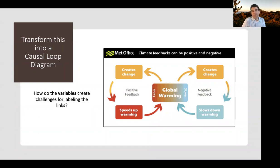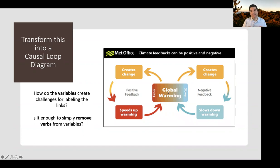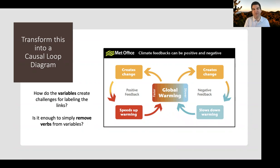If we try removing all the verbs, instead of 'creates change' we just get 'change,' and instead of 'speeds up warming' we just get 'warming.' But then we just get 'change, change, warming, warming,' and it doesn't really tell us anything about the process. That's the thing about causal loop diagrams — every cause, effect, and link needs to have some way for you to physically justify what's going on. We don't actually know why this loop happens; we're just taking for granted that there are physical processes that make sense in this positive feedback loop.